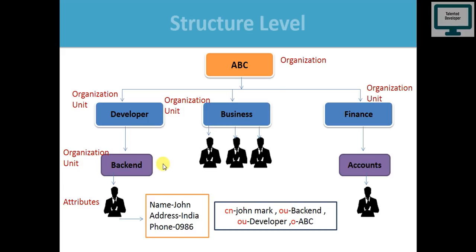John Mark also belongs to the Organization Unit: Developer group, and he belongs to the Organization named ABC. When calling this person, always start from the lower end — attributes first. Attributes contain information like name, address, phone number, and other details. So to reference John Mark: CN=John Mark, OU=Backend, OU=Developer, O=ABC. This is the normal flow for identifying someone in LDAP.